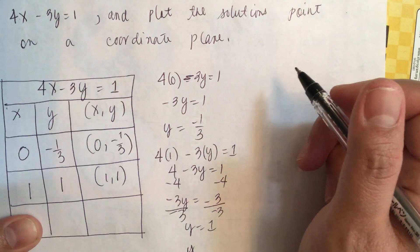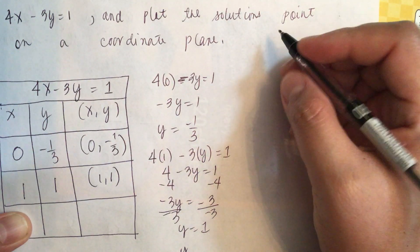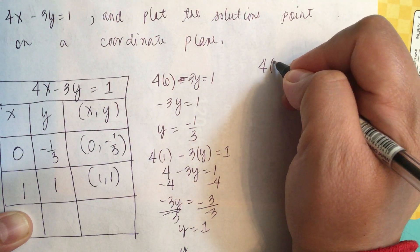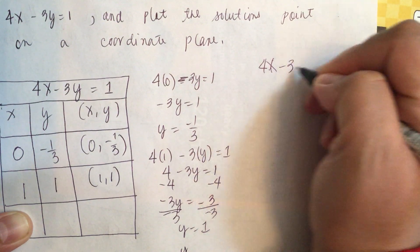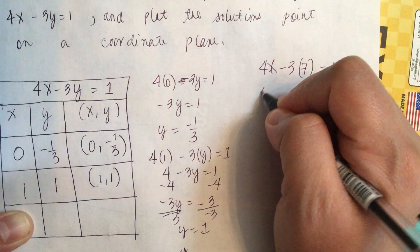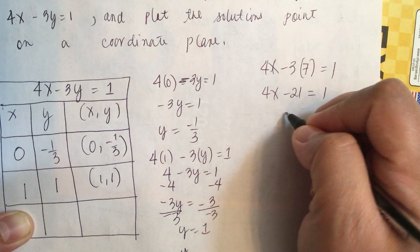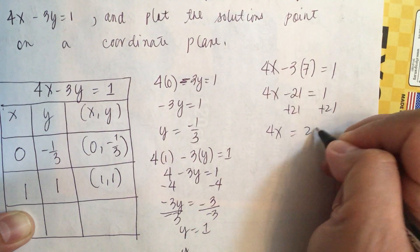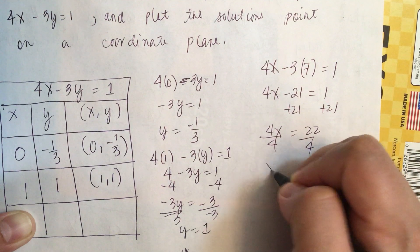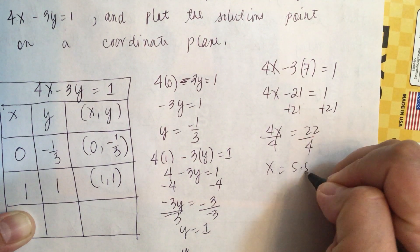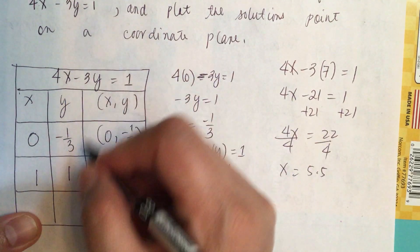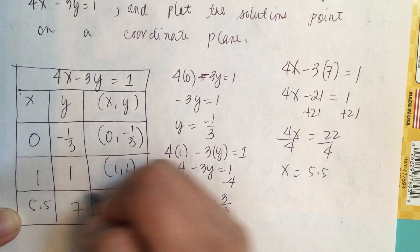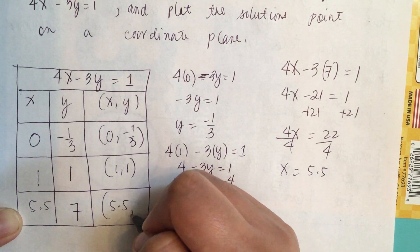And then we can choose one more. So when y equals, say, 7, we have 4x minus 3 times 7 equals 1. So 4x minus 21 equals 1. So 4x equals 22. Divide by 4, x equals 5.5. So when y is 7, x is 5.5, giving us 5.5 comma 7.